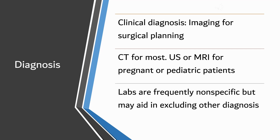Urinalysis is done to rule out genitourinary problems that could be mistaken for acute appendicitis. A few red or white blood cells may be found as a non-specific sign. If the appendix is inflamed, it could cause sterile pyuria or blood in the urine. A plain film of the abdomen is only obtained if the doctor is concerned about something else, like intestinal obstruction, perforated viscus, or ureterolithiasis.